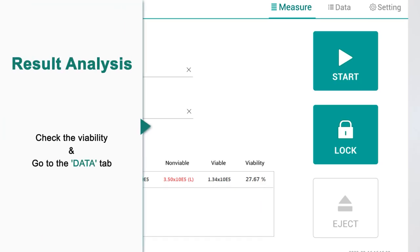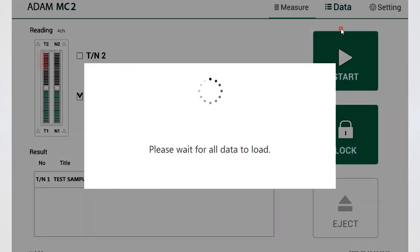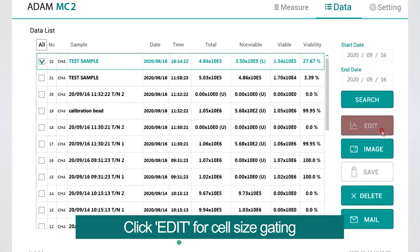Fifth, result analysis. On the data tab, if you select the data in the data list, edit, image, save, mail, and delete icons are activated.